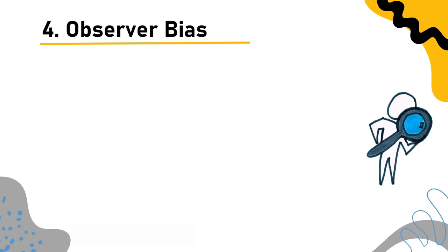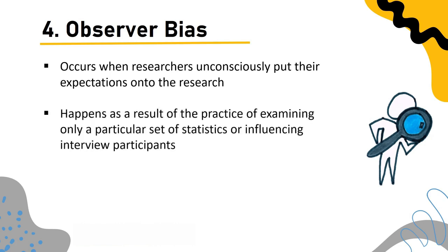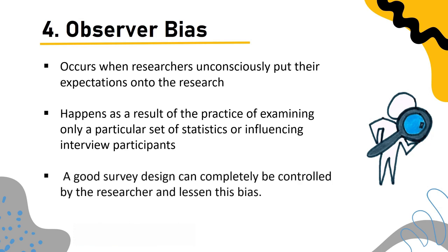Observer bias: When researchers unconsciously project their expectations onto the research, observer bias occurs. It happens as a result of examining only a particular set of statistics or influencing interview participants. A good survey design can help researchers control and lessen this bias.